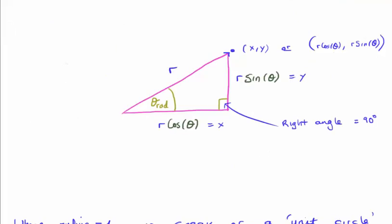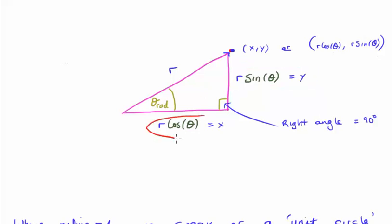Viewing this graphically: where we define the hypotenuse as r, any point on the circle can be described by an x-coordinate and a y-coordinate. The opposite side is r times sine theta, which corresponds to the y-coordinate, and r times cosine theta corresponds to the x-coordinate. So any point has coordinates (r cos theta, r sin theta).